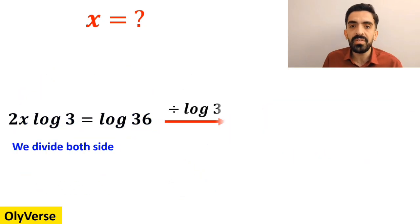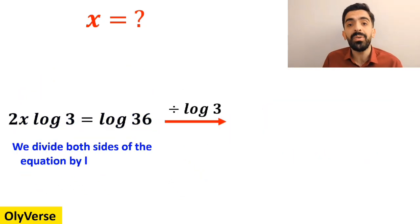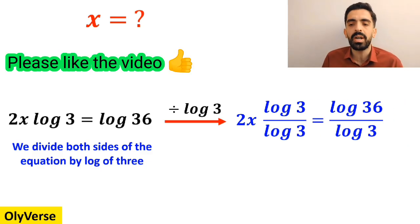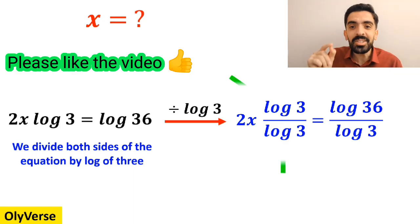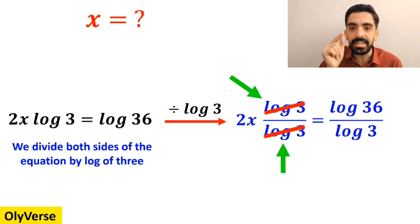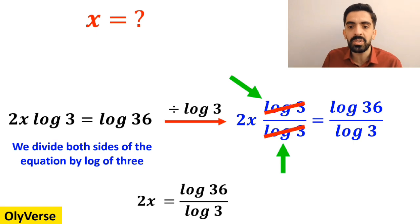Now we divide both sides of the equation by log of 3. So it becomes 2x times log of 3 over log of 3 is equal to log of 36 over log of 3. The log of 3 terms cancel each other out, and this simplifies to 2x is equal to log of 36 over log of 3.